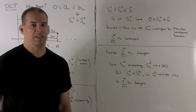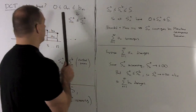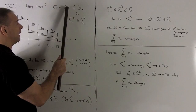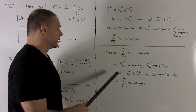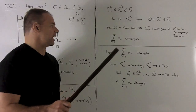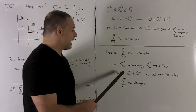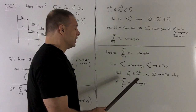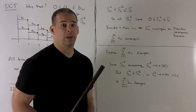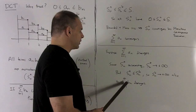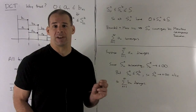Now for divergence: suppose the series for a_n diverges. Since S_n^a is increasing and divergent, it must shoot up to plus infinity. But S_n^a ≤ S_n^b, so if S_n^a goes to plus infinity, it forces all the S_n^b values off to plus infinity as well. That's the definition of the series for b_n diverging. So if the series for a_n diverges, then the series for b_n diverges with it.